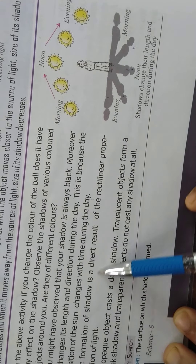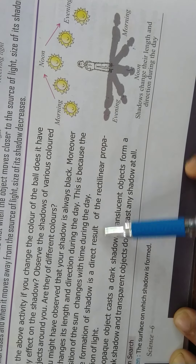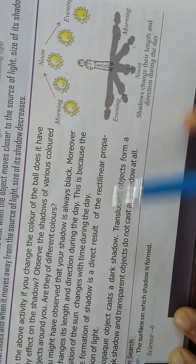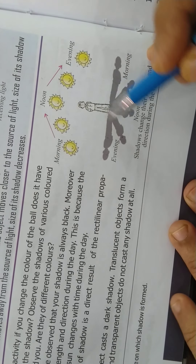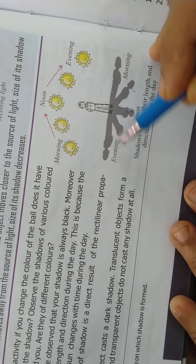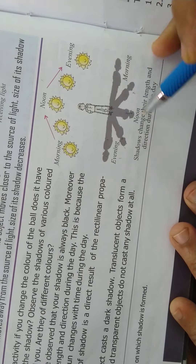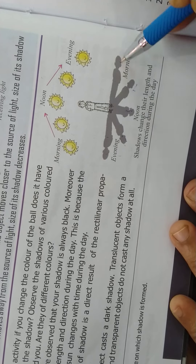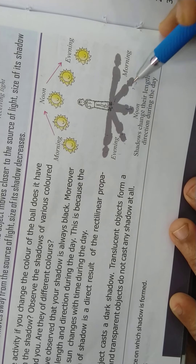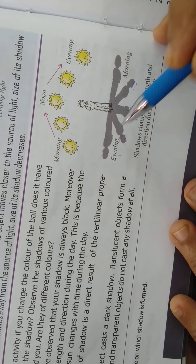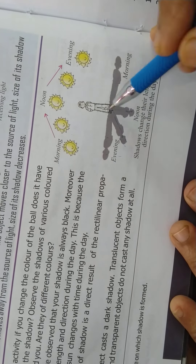Formation of shadow is a direct result of the rectilinear propagation of light. See how the shadow is formed in a straight direction.